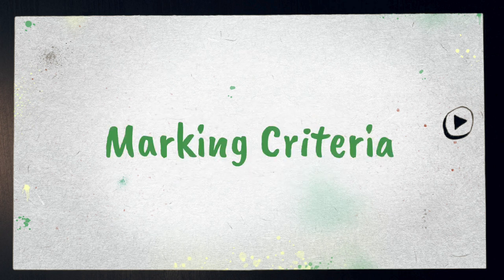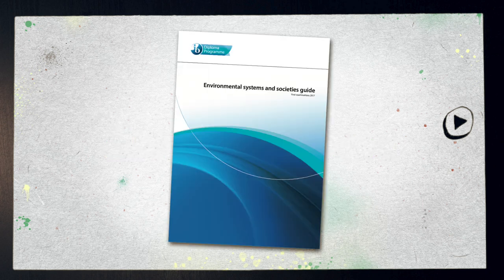You'll be marked against very specific criteria and you should have full access to that marking criteria before you start. It's in the subject guide, but if you can't find it, ask your teacher. Another huge mistake that I often see students making is not using the marking criteria when writing their assignment — it's literally a point by point list of what needs to be included.